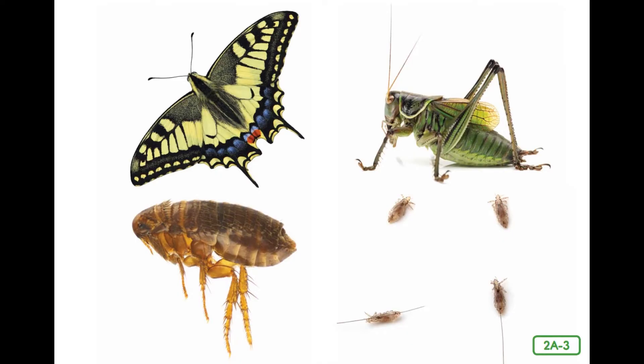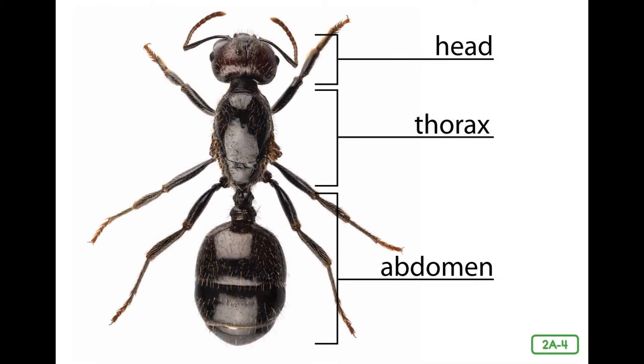Our name should give you a clue. An insect's body is built in sections or parts — three parts to be exact. We'll use one of my friends, the ant, as an example. All insects have a head, a thorax, and an abdomen.